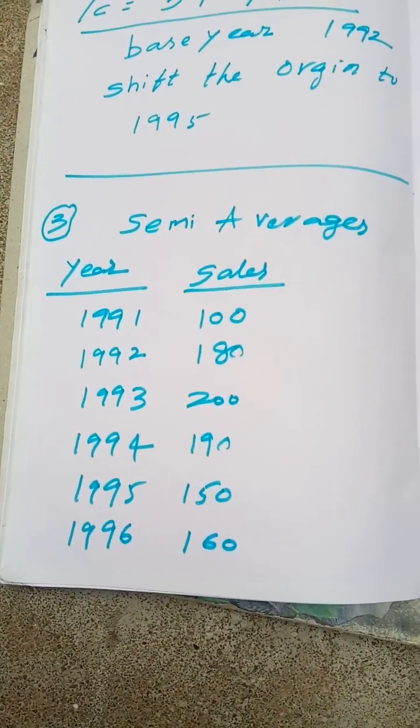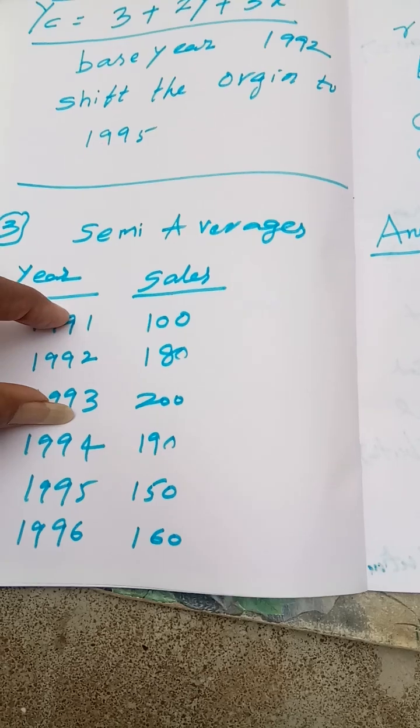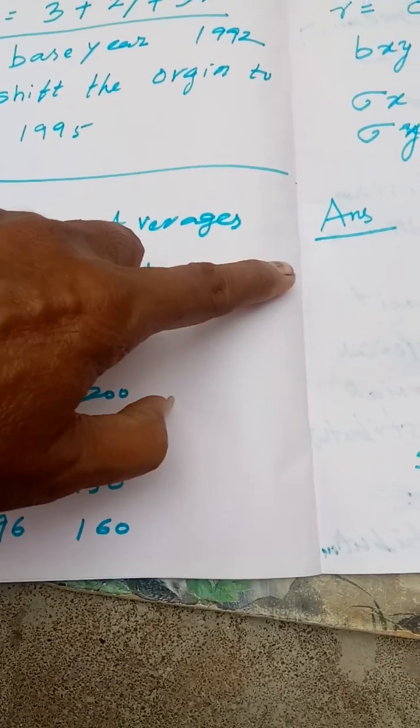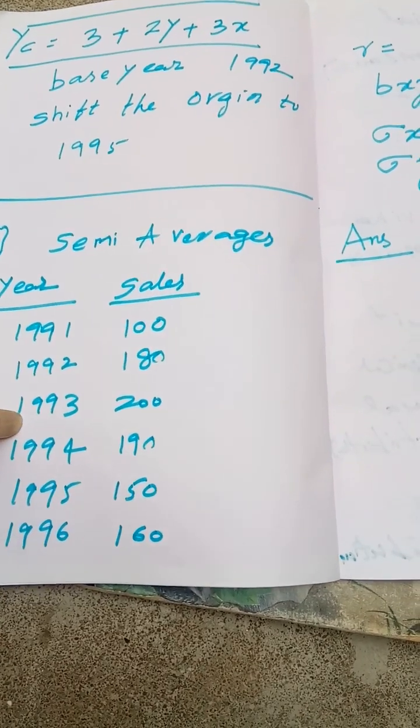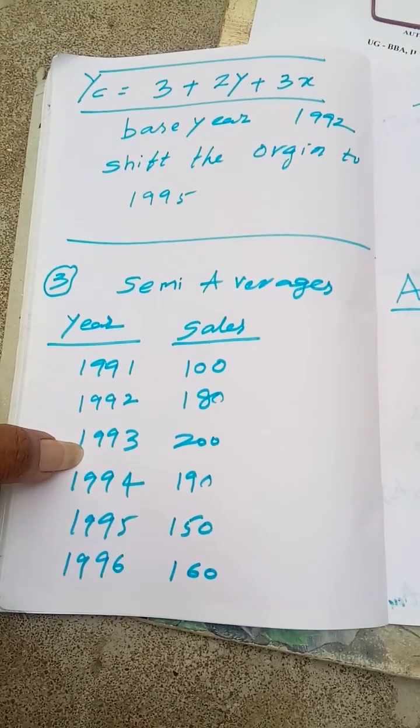So semi-average: we want to do half of years, we want to do semi total. We want to choose the previous video.